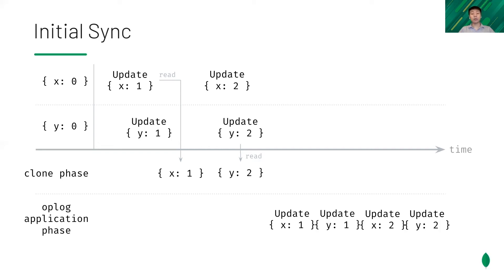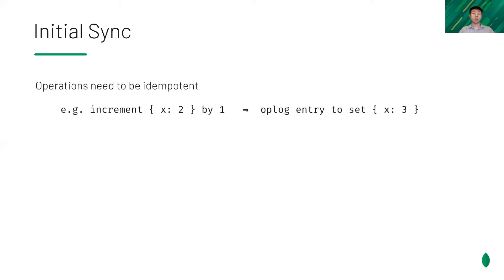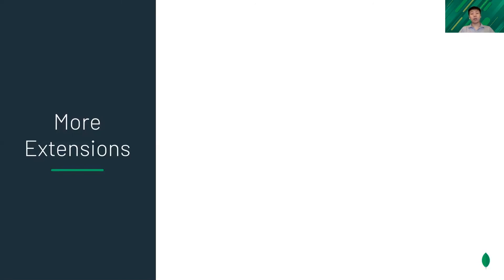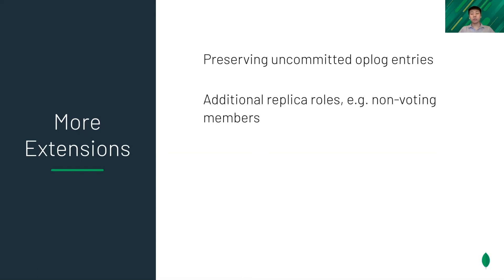It's possible some of the operations are applied twice, so they need to be idempotent. For instance, incrementing a value will generate an entry to set it to the final value on speculative execution. We also added more extensions to support our features. Uncommitted op-log entries are preserved after the failover as much as possible. Non-voting members are introduced to support many replicas for local reads.